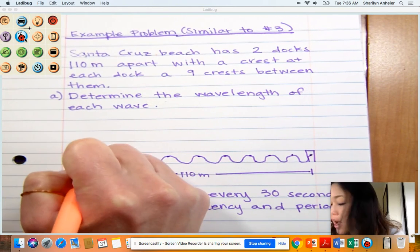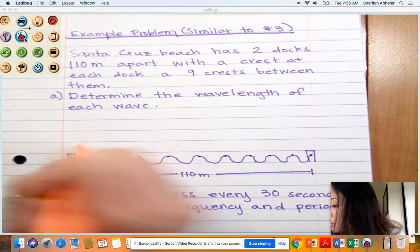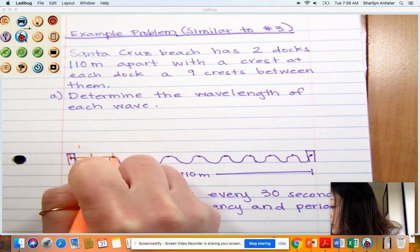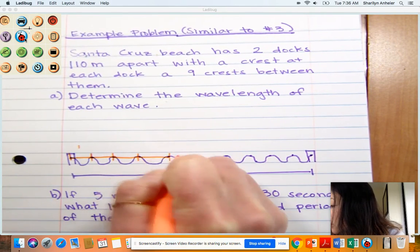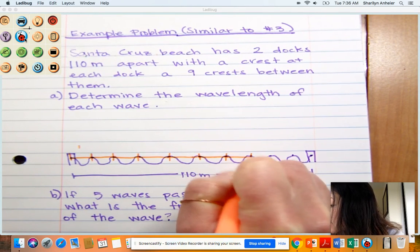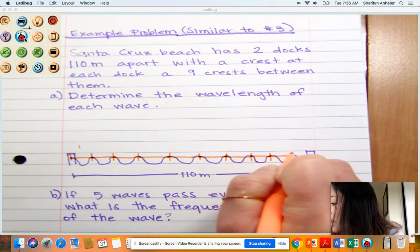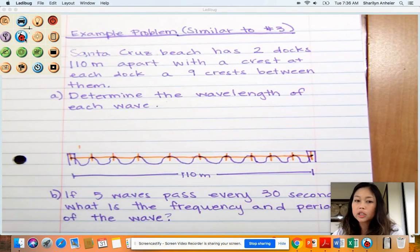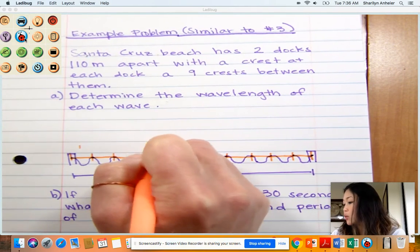From crest to crest, I've got one wave, then 2, 3, 4, 5, 6, 7, 8, 9, and 10. So all together I've got 10 waves total.